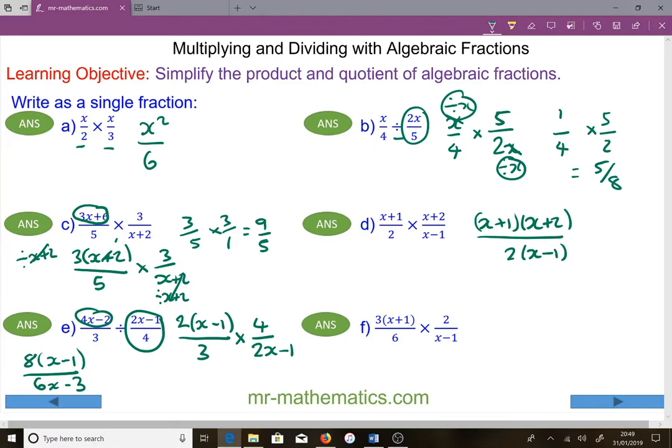Finally, for question f, we can cross simplify with this 2 and this 6. We divide both by a common factor of 2, so we have 3 lots of x plus 1 over 3, multiplied by 1 over x minus 1. These 3s will cancel, so we have x plus 1 over x minus 1.